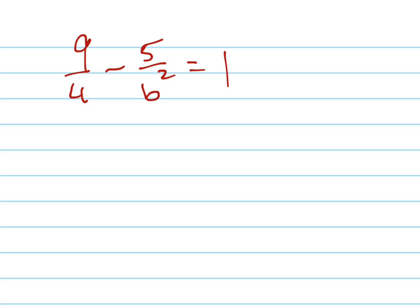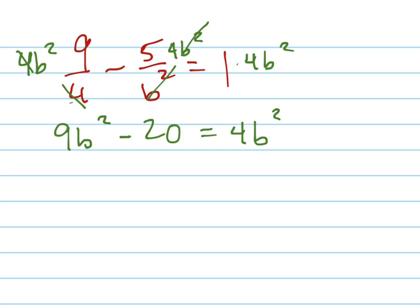There's a couple ways you can solve that equation. I'm going to show you a way that I like to call clearing the fraction. I'm going to multiply everything by 4b². And when I do that, the 4's cancel, the b²'s cancel, and you get 9b² - 20 = 4b². Subtract 9b² from both sides. You get -5b² = -20. Divide both sides by -5. You get 4 = b², which means b = 2.